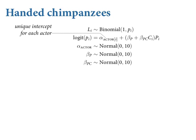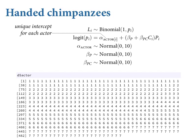We define a unique intercept for each actor — alpha-1 through alpha-7 since there are seven chimpanzees. Alpha sub actor-i means: take the i-th value of the actor column and use that as an index to give you that parameter out of the vector of alphas. For every row in the data, there's an actor ID, and that's the chimpanzee that did the pulling on that particular trial.